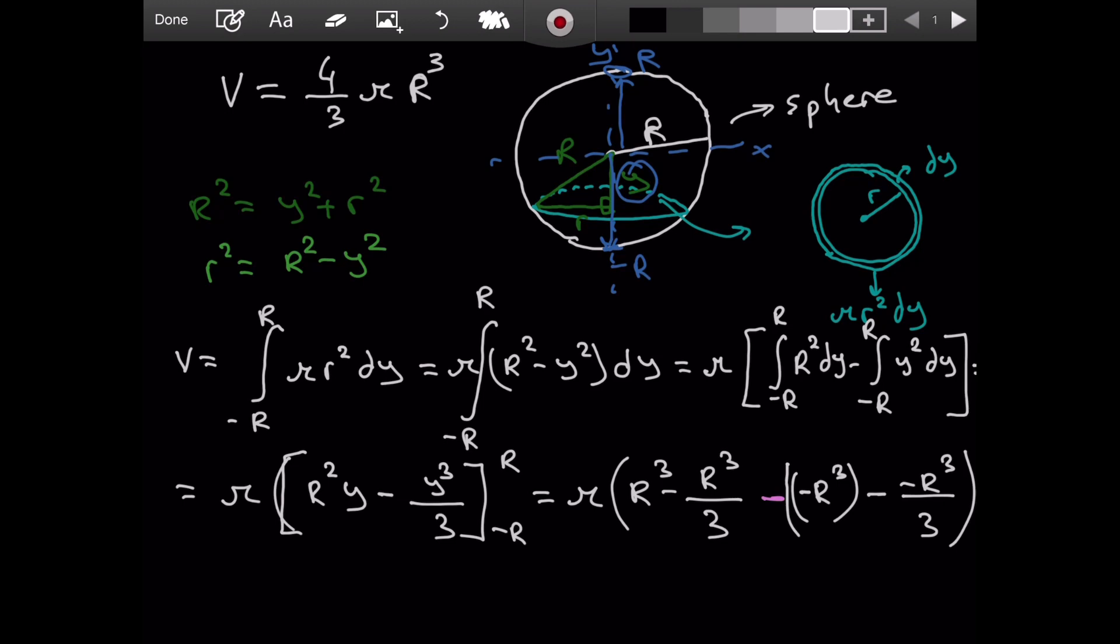That will give, we had the negative. So, negative r cubed divided by three. What happens then? Let's see.